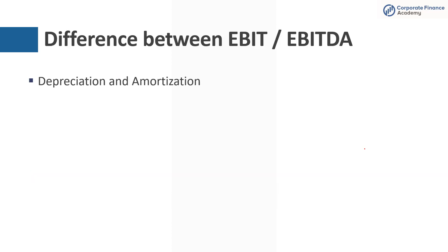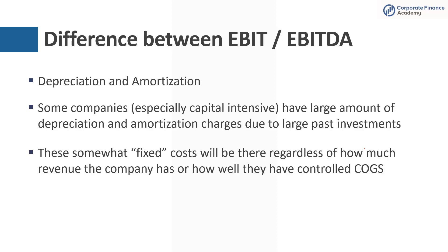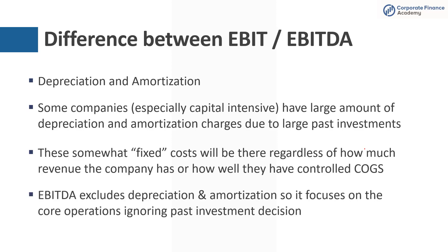The difference between EBIT and EBITDA is really depreciation and amortization. Some companies have a large amount of D&A charges due to recent or large past investments they've made. These costs are somewhat fixed — they'll be there no matter what the revenue is this year or how well costs have been controlled. But EBITDA excludes depreciation and amortization and focuses on the real core operations.